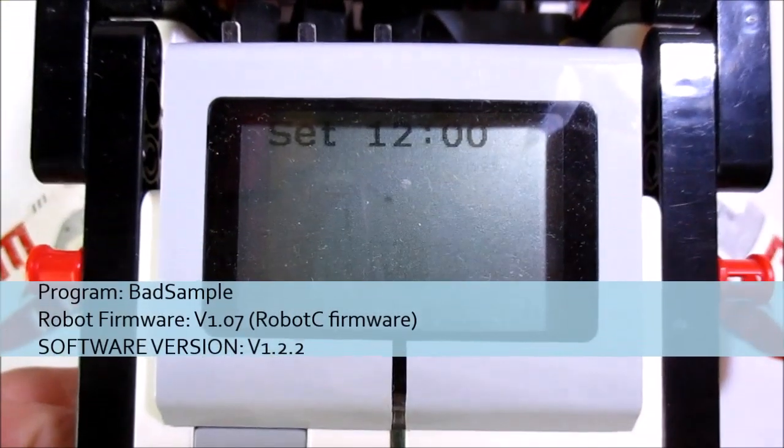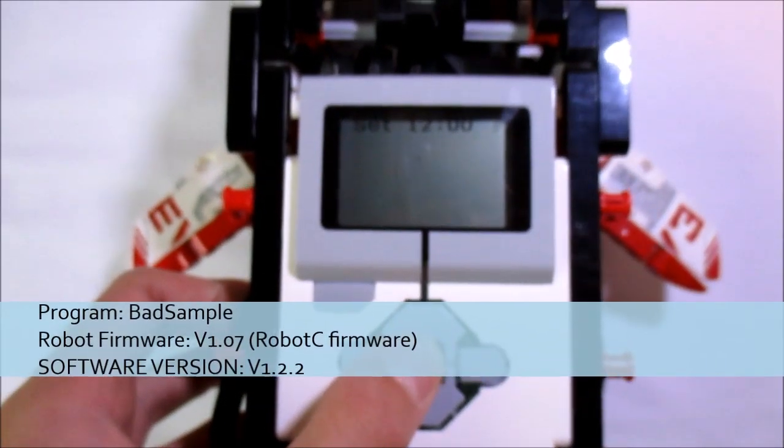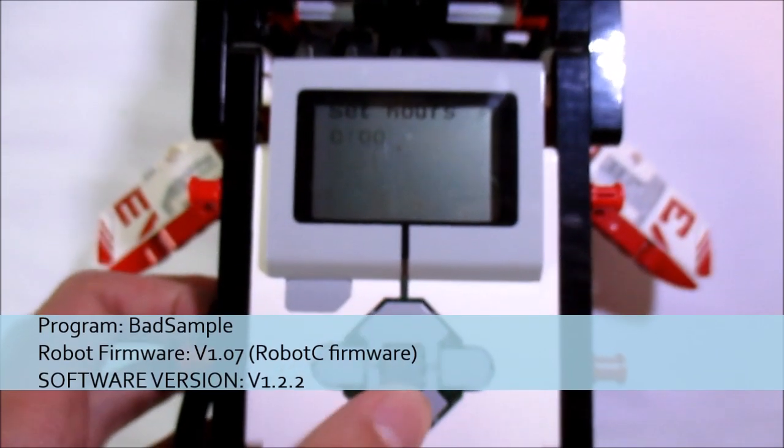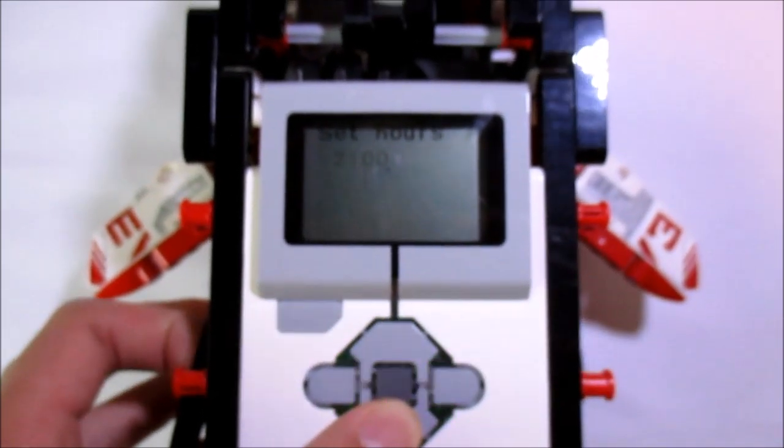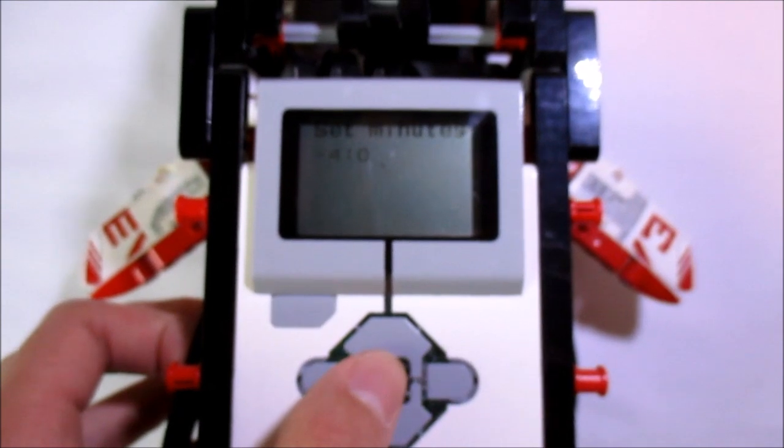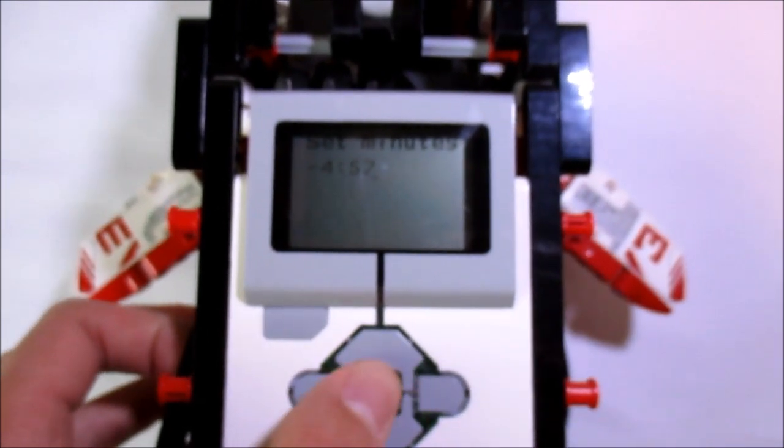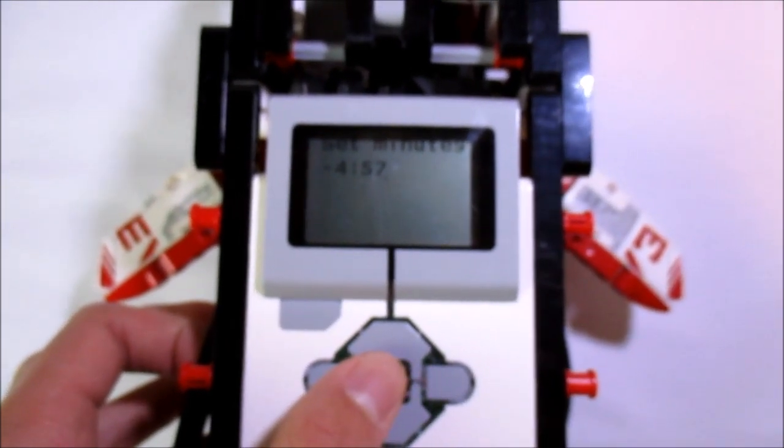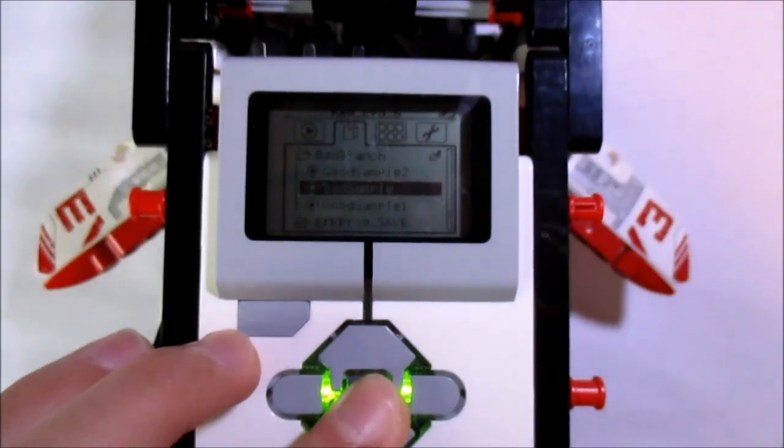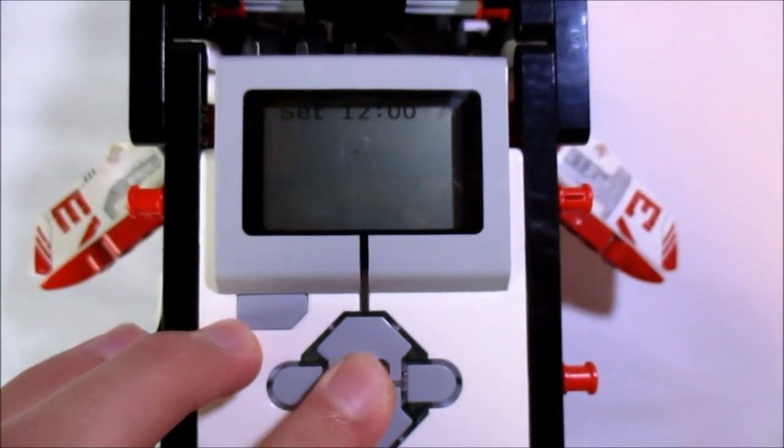Now I've recompiled the BadSample program using the new version of the software, and let's start it. As you can see, whereas the BadSample with the old version of the software got frozen at the first part of the program and we couldn't advance anymore,